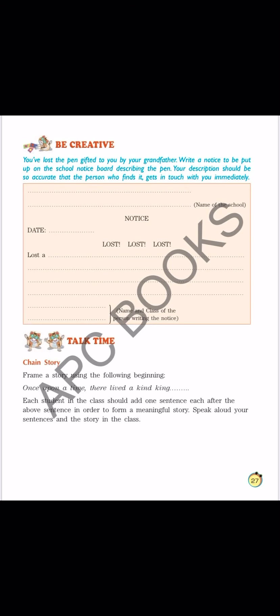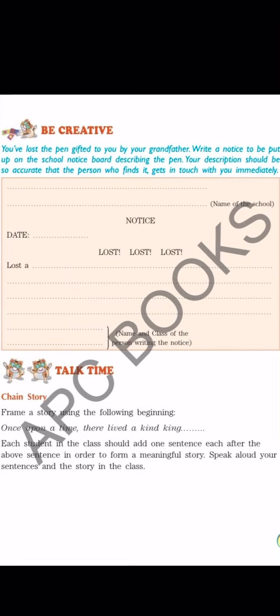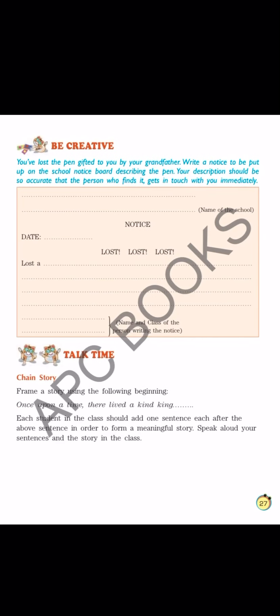That format is given in the picture also - see. The first two lines are for the name of the school. Here you will write 'Army Public School', and in the second line you will write 'Old Cantt, Prayagraj'. Please be careful, you have to write Prayagraj - don't write Allahabad. In the next line at the center, you will write 'NOTICE'.